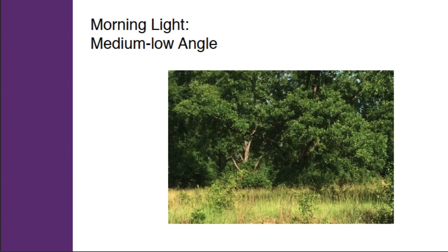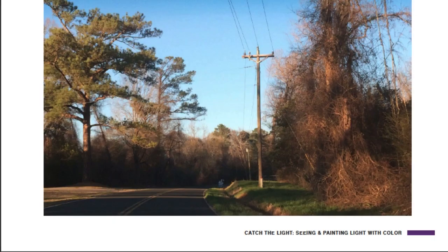Here's an example of morning light. It's a medium-to-low angle, with the direction of the light behind you the viewer, shining directly on the subject — so the scene is flooded with light. In this second instance, we again have low-angled morning light, but the direction of the light is to our left. Because it's coming from the left, we have even stronger shadows playing across the landscape.